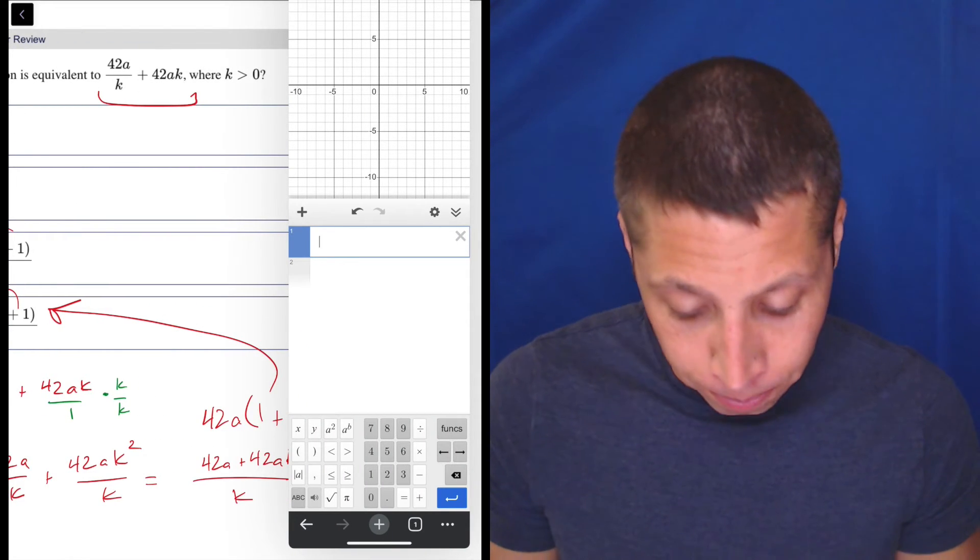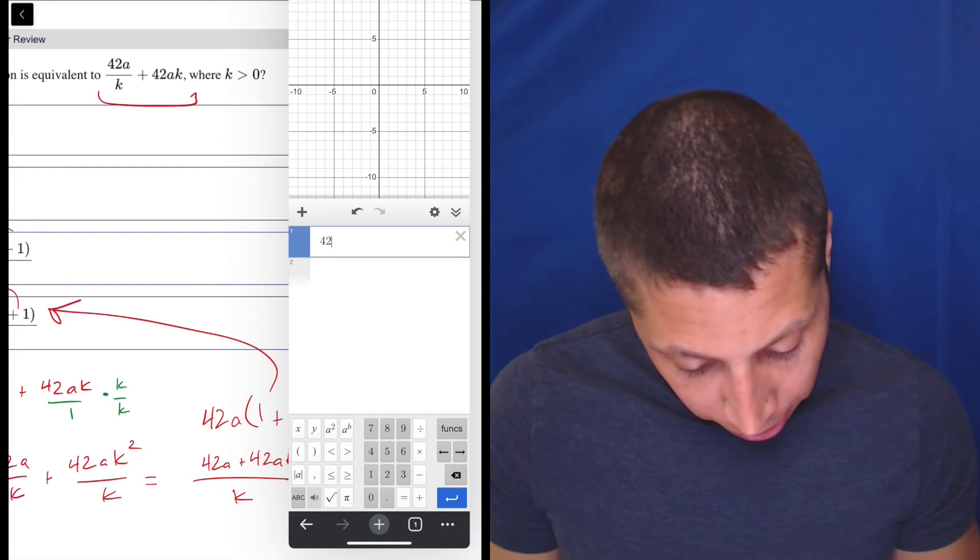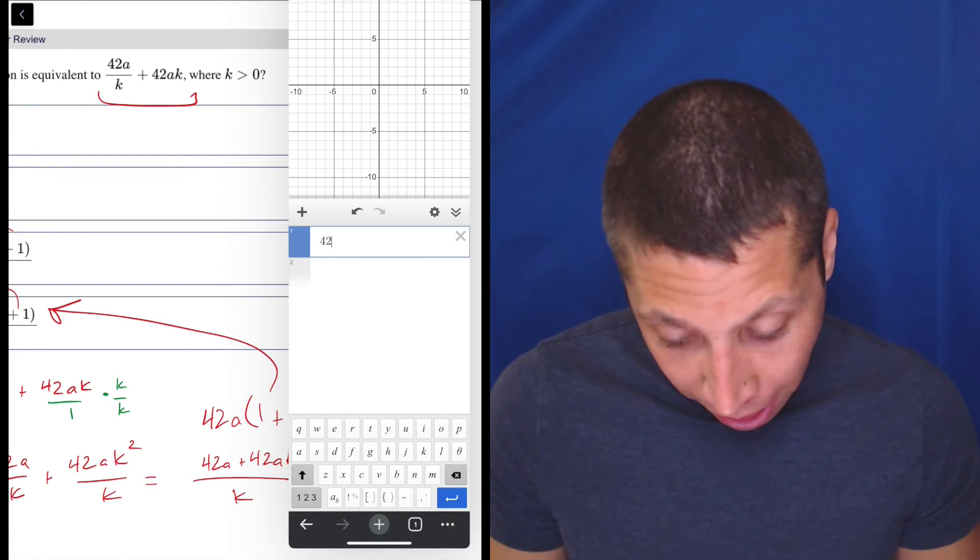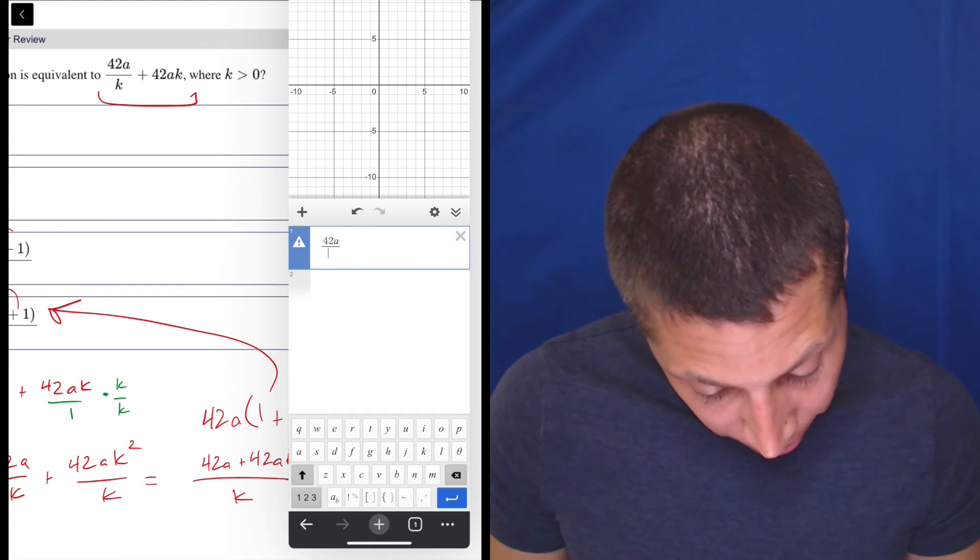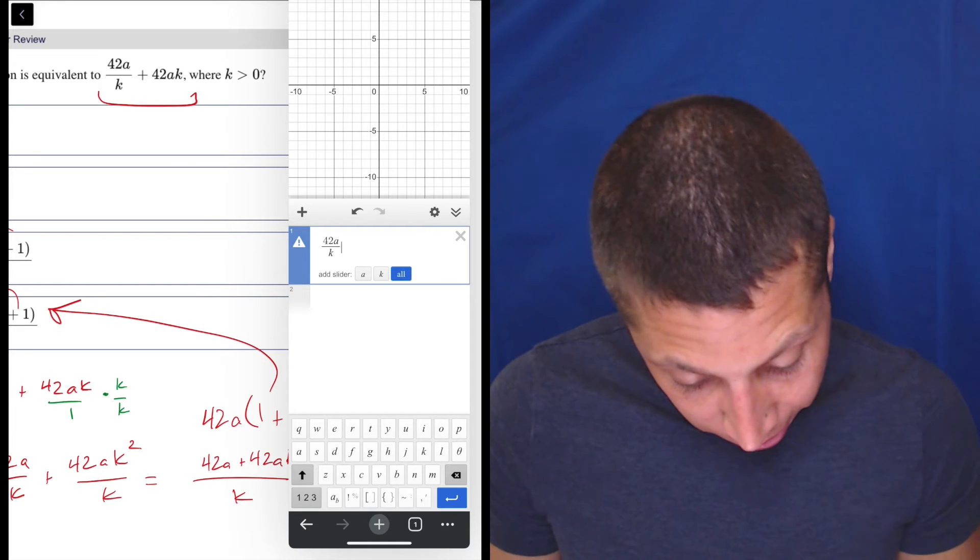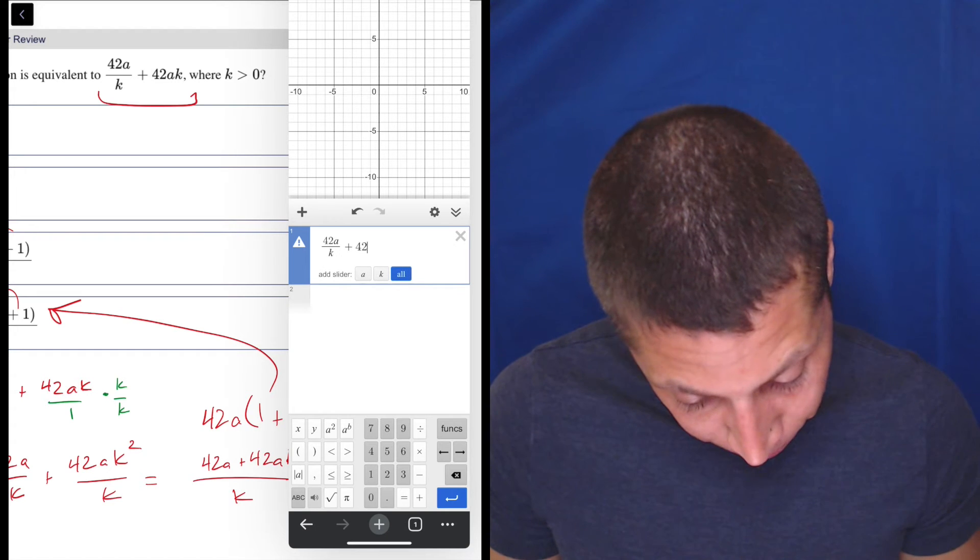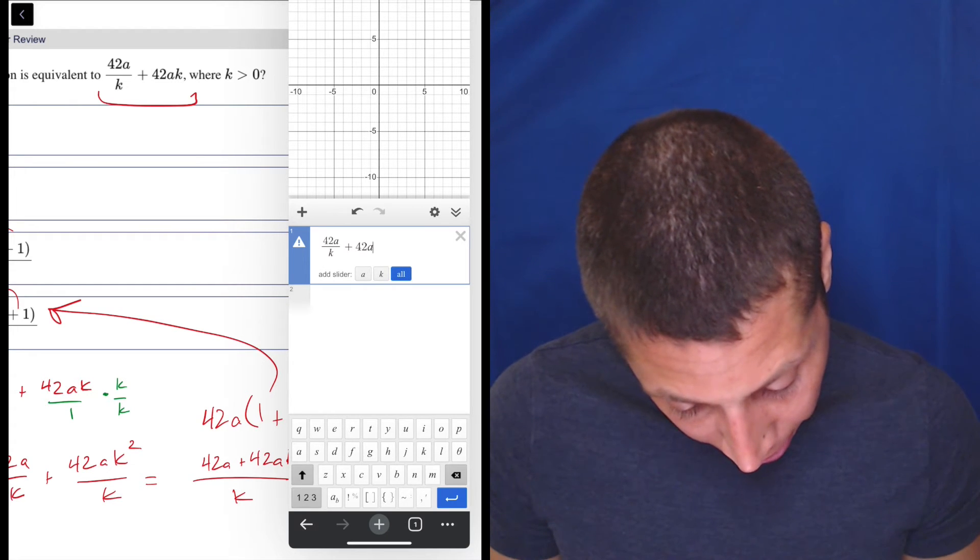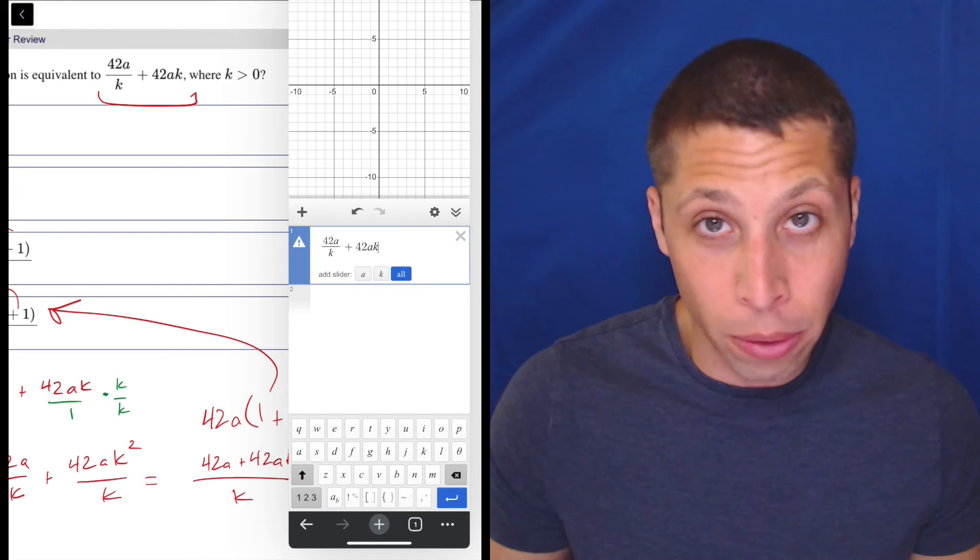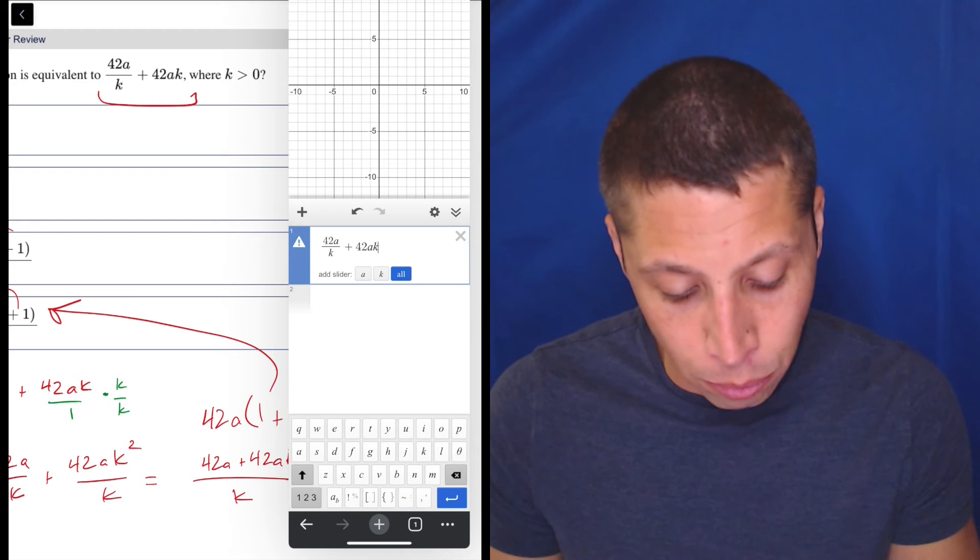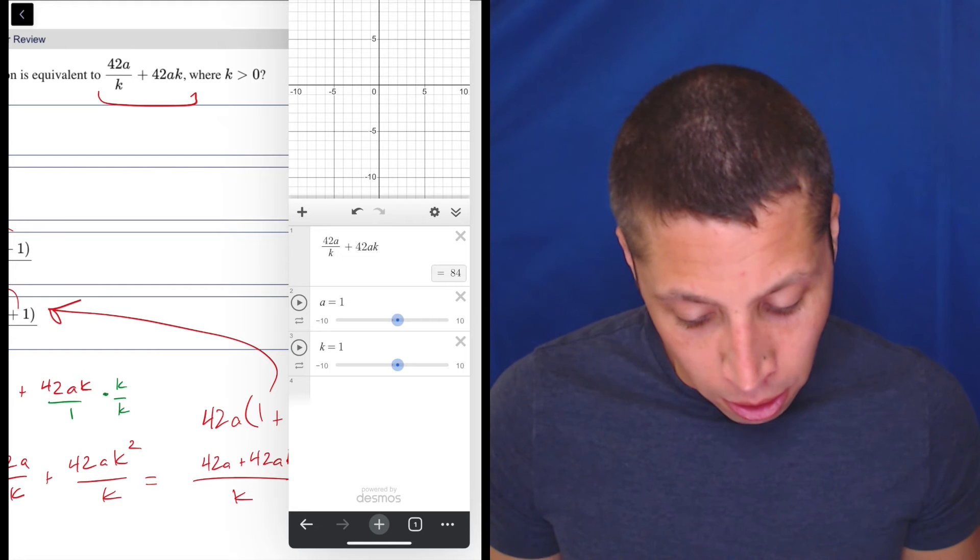So what I could do here is just say, what happens if I have 42, let's literally do a, so a divided by k, divided by k plus 42ak, 42ak. So if we put it in, it's not going to let us do anything, because it's saying, okay, well, we don't know what to do with this. We don't have any values of a and k. So we can hit this, and now we have sliders, and it's going to tell us 84 is the value.